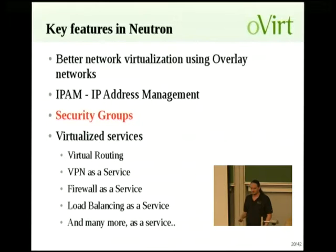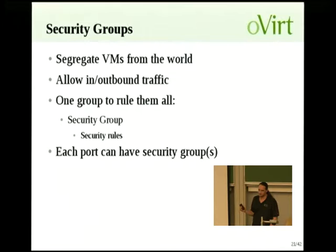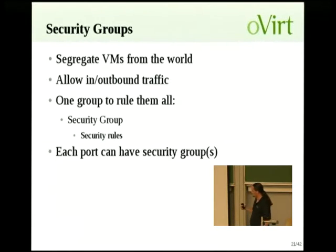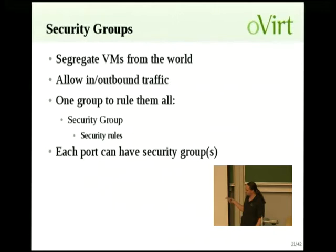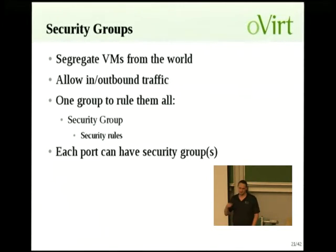Security groups are a way to segregate your VMs from the outside world. By default, the VM gets no incoming traffic — only return traffic if it initiated the session — and all outbound traffic is allowed. In each security group there are multiple rules: you can allow SSH, block outgoing traffic for certain port ranges, and so on. Each port can have one or more security groups attached. This is new in oVirt 3.4 — before that, oVirt didn't know about security groups. Now you can specify which security groups you want to use.